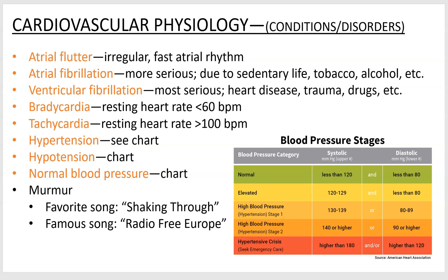Ventricular fibrillation is the one you always see in hospital movies where someone gets the defibrillator paddles. Fibrillation is a quivering, shaky, gelatin-like movement of the heart that can't pump blood. When they shock you, it depolarizes all the heart cells simultaneously; if they all depolarize at the same time, they'll all repolarize at the same time, restoring a proper rhythm. Hypertension and hypotension are high and low blood pressure, respectively — note that hypotension is not on the chart.